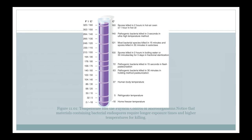This figure shows a useful conversion between Fahrenheit and Celsius, and also tells you about different temperatures and what happens to bacteria. At 5°C you have refrigerator temperature; 37°C is human body temperature, which is about 98°F. Higher temperatures on the chart show what gets killed — endospores versus just bacteria without their spores.